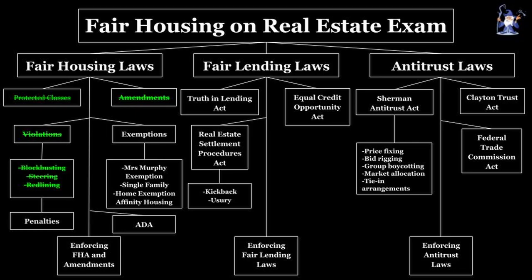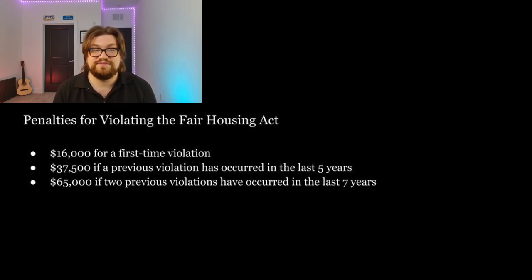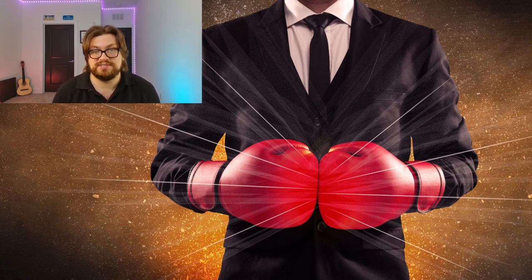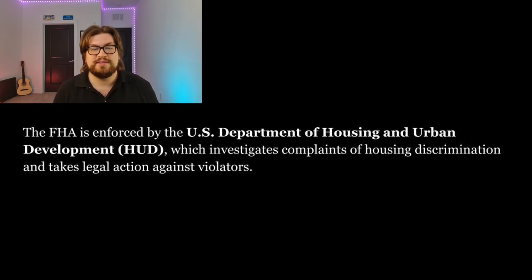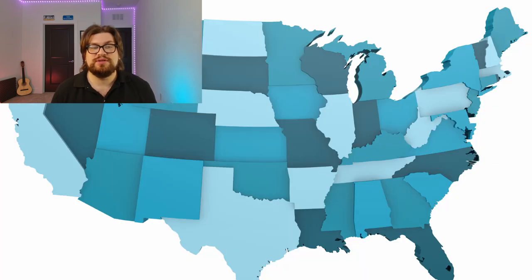Let's cover penalties for violating the Fair Housing Act. According to the Department of Housing and Urban Development, penalties include a $16,000 first-time violation fine, a $37,500 fine if previous violations have occurred in the last five years, and $65,000 if two previous violations have occurred in the last seven years. In cases where home providers use force or threat of force to violate the FHA, penalties are even more serious and can include possible time in prison. The FHA is enforced by the U.S. Department of Housing and Urban Development, or HUD, which investigates complaints of housing discrimination and takes legal action against violators. HUD also provides education and outreach programs and funds state and local agencies that enforce substantially equivalent fair housing laws.